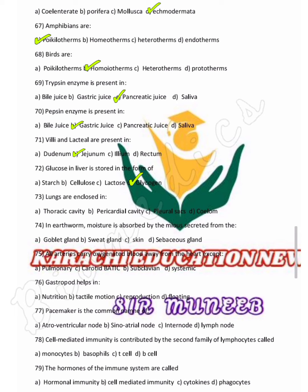The pericardial cavity is the cavity that encloses the heart. Lungs are enclosed by the pleural sac. In the respiratory tract, moisture is absorbed by mucus secreted by goblet cells.